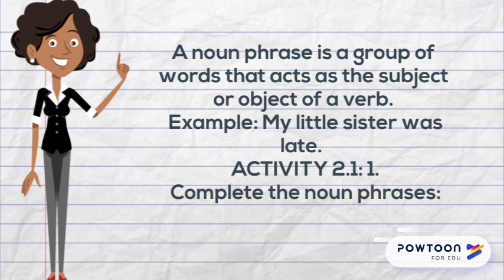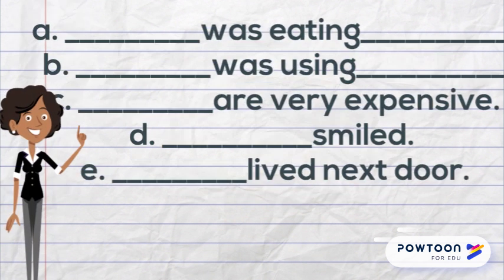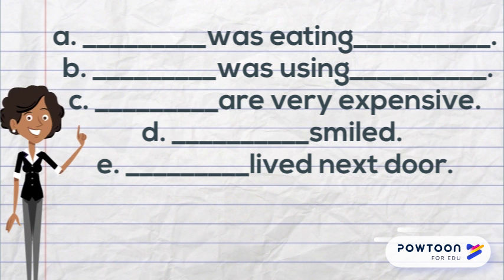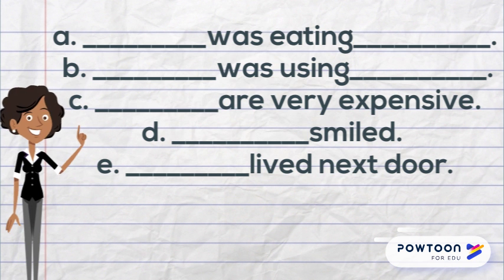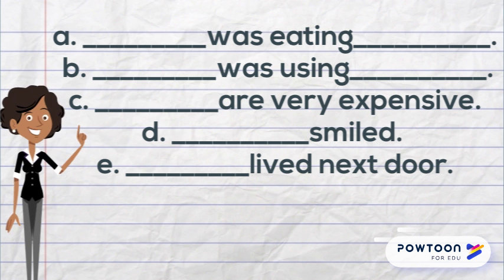Wizards, see if you can complete this activity. Complete the noun phrases — fill in the missing space. A: Was eating. B: Was using. C: Are very expensive. D: Smiled. And E: Lived next door.